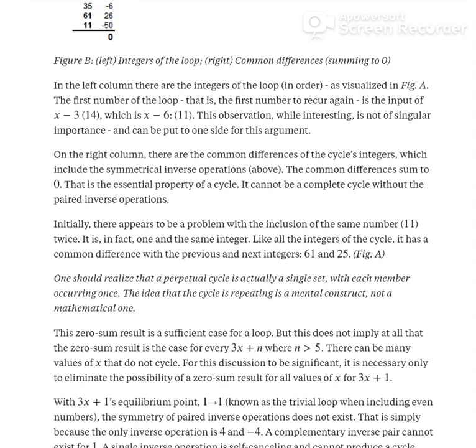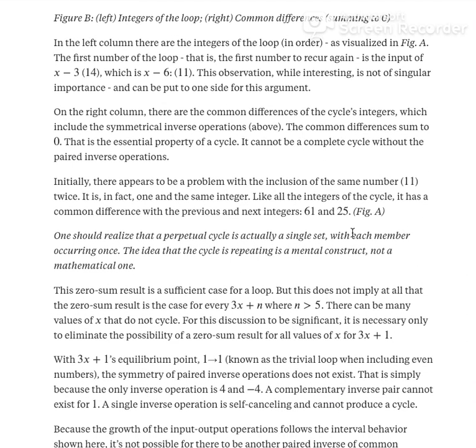With 3x+1's equilibrium point, which is, as we all know, input 1, output 1, also known as the trivial loop when including even numbers, that's the 2 and the 4, the symmetry of paired inverse operations does not exist. This is just a function of 1 being the first positive integer. It's simple because the only inverse operation can be 4 and -4. A complementary inverse pair cannot exist for one. A single inverse operation is self-canceling and cannot produce a cycle.